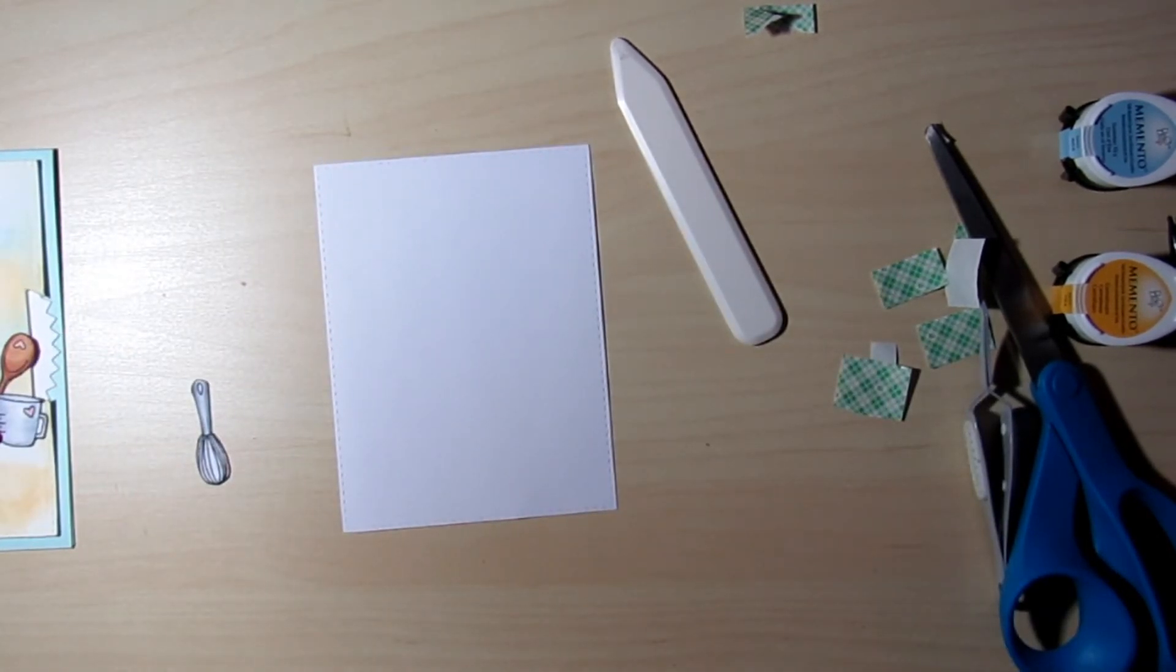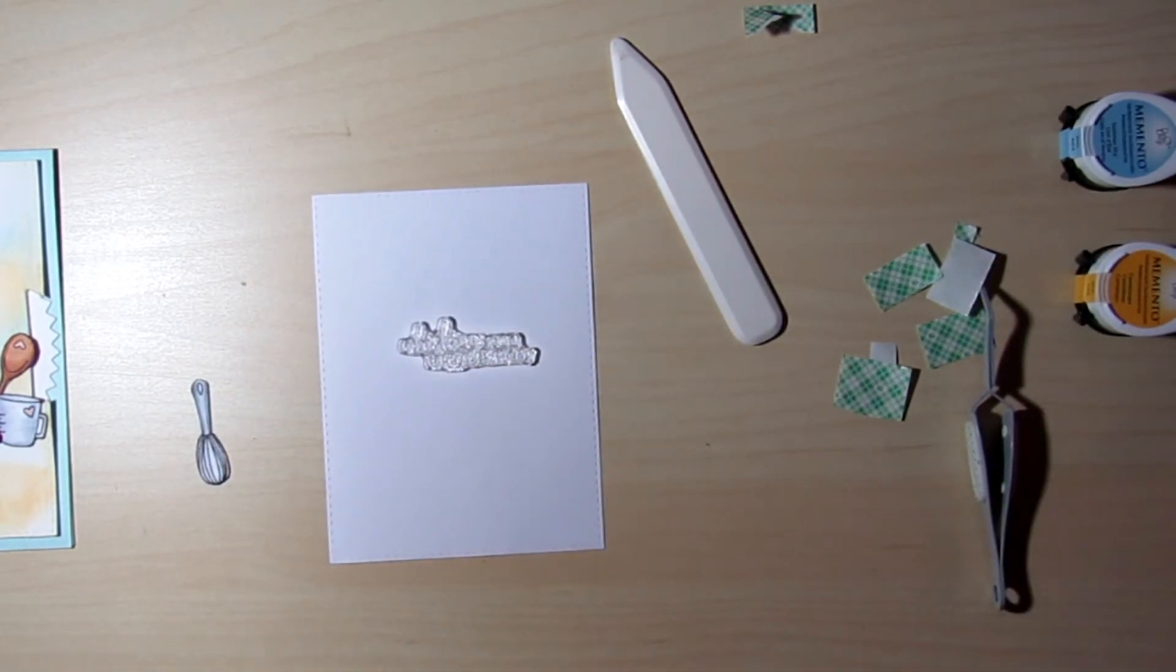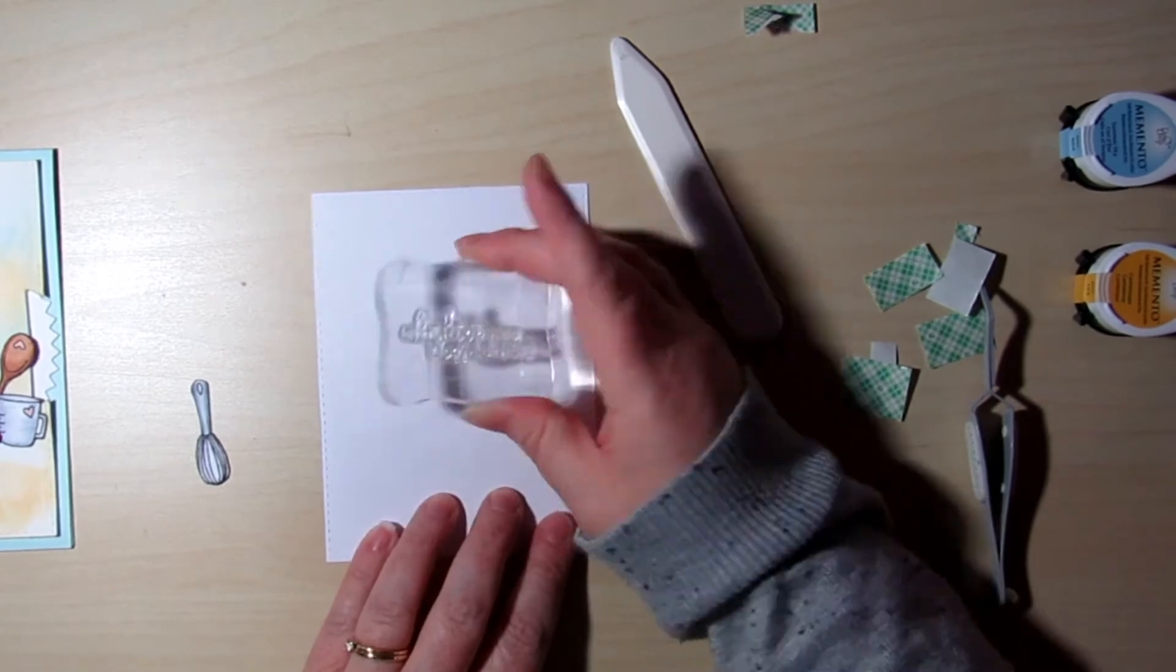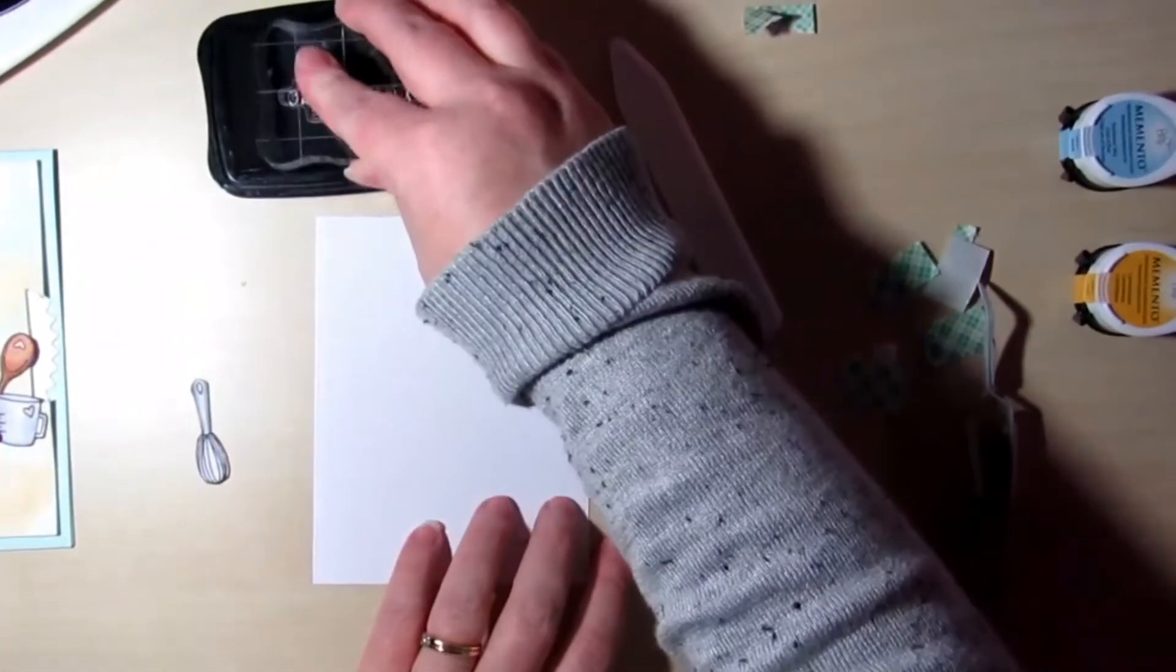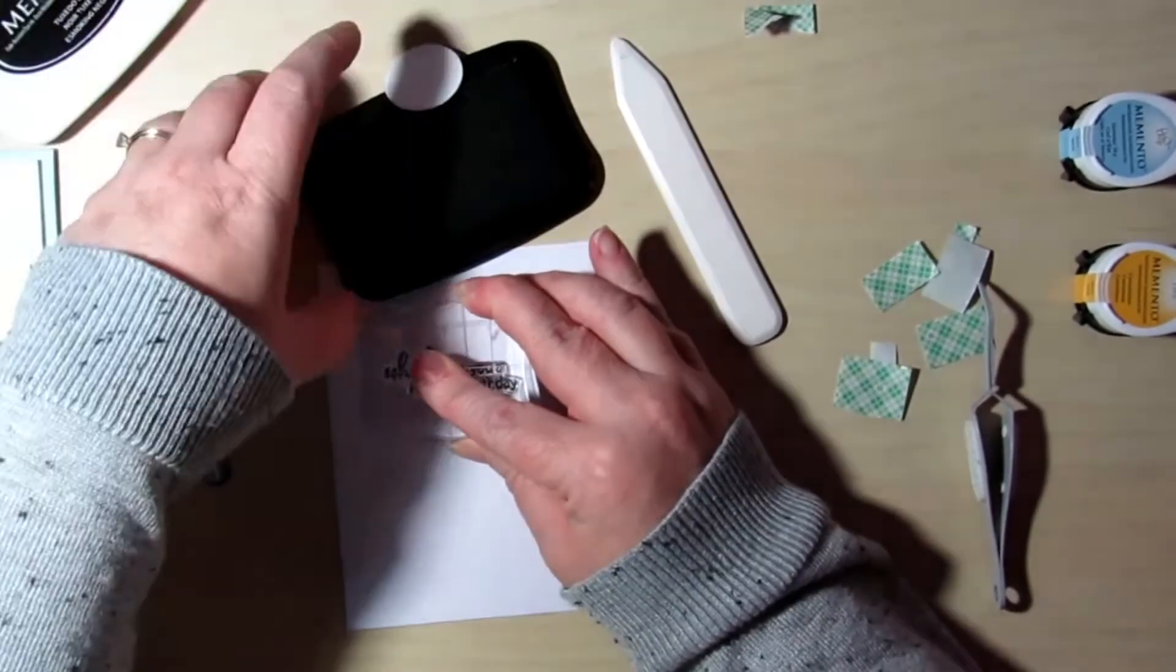So again from the same stamp set, I'm grabbing another sentiment. And this one says whisking you a happy birthday. And I did leave the whisk out because I thought it would be perfect to fit on the inside with this sentiment.